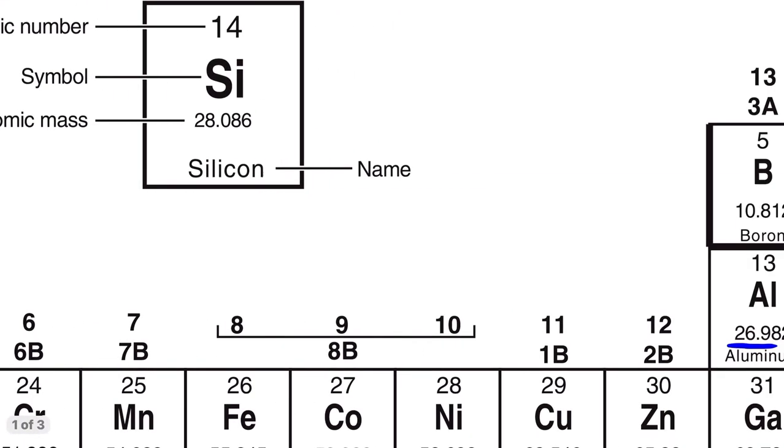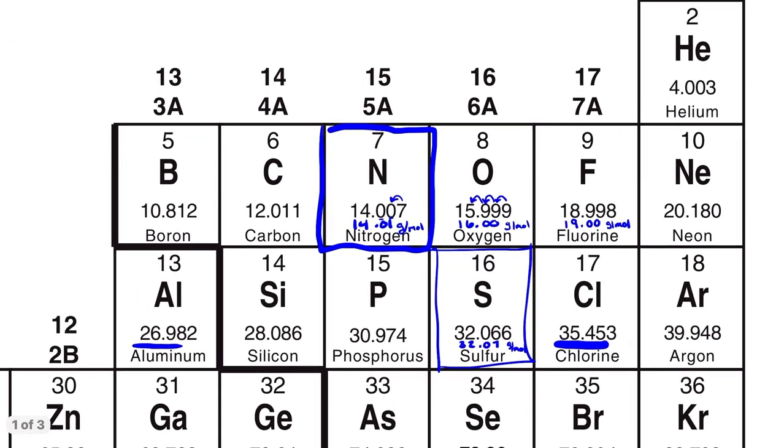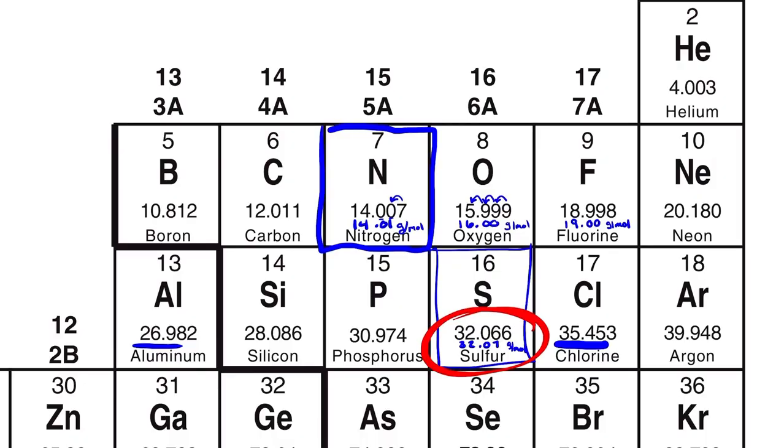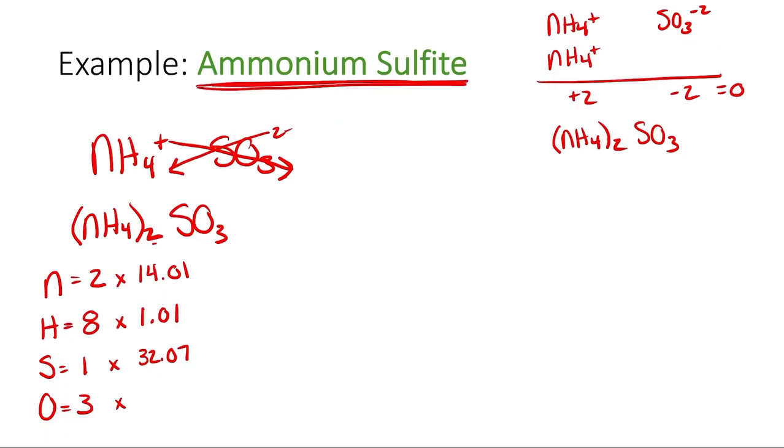Sulfur, let's take a look for sulfur. Sulfur is right here, 32.07. And then oxygen, remember oxygen is right up here, and that's going to be 16.00.